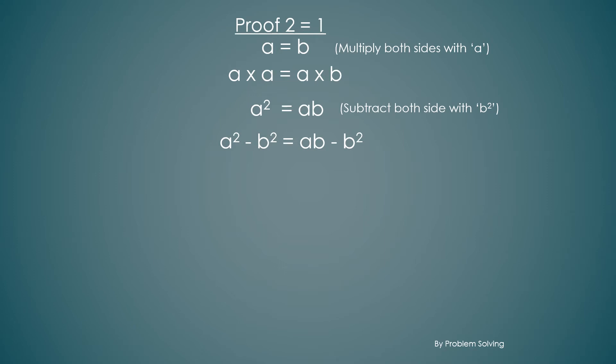On the left hand side we can simplify a squared minus b squared as a plus b times a minus b, and on the right hand side since b is common we take it out and a minus b will be left inside the bracket.